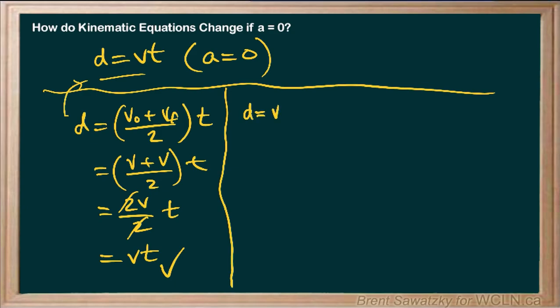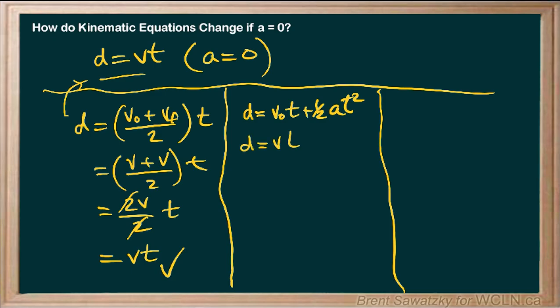If we have d equals v-naught times t plus one-half a t-squared — one we use an awful lot in physics — if the velocity isn't changing, we can replace v-naught with just v, since there's no change. Also, if v isn't changing, that means acceleration is zero, so that entire last term is gone — anything times zero is zero. Bottom line: d equals vt. We took a more sophisticated formula, applied the same assumptions as before, and it works out exactly the same.